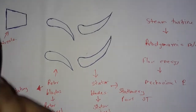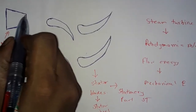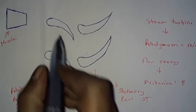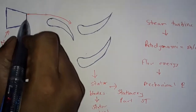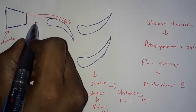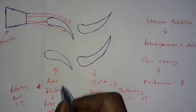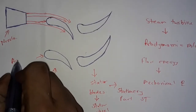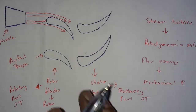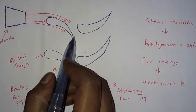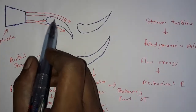The flow of steam coming from the nozzle goes onto the rotor blades like this. These rotor blades have an aerofoil shape, as you can see in the figure. Because of this airfoil shape...